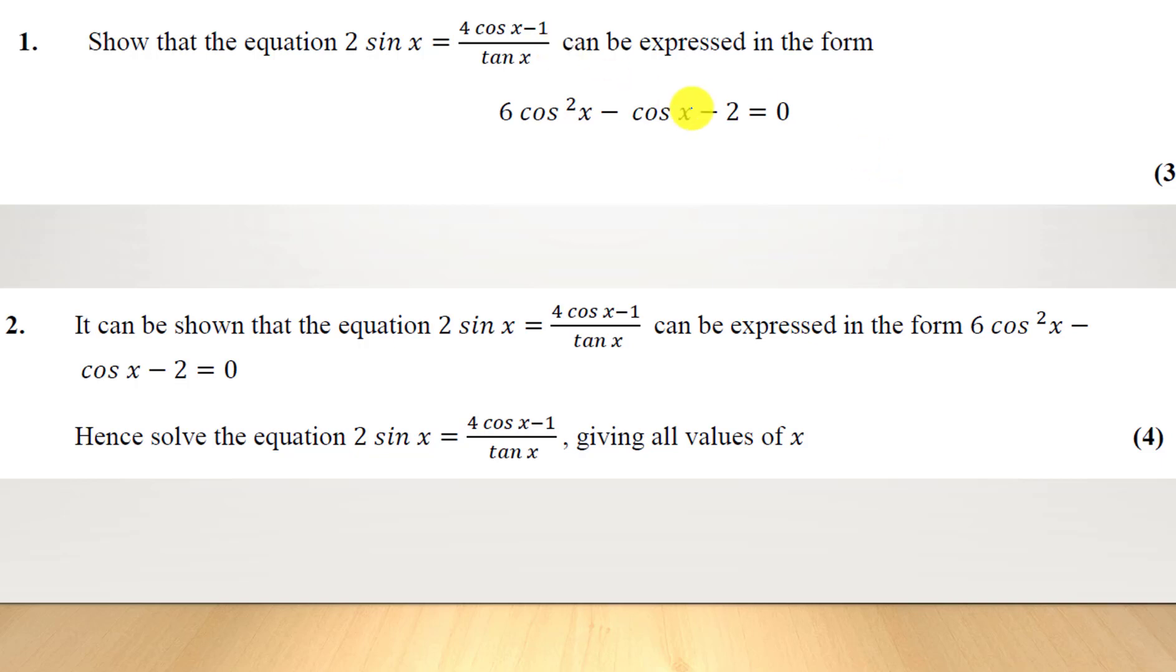Okay, so let's have a look at this question now. It says show that the equation 2sin(x) equals 4cos(x) minus 1 over tan(x) can be expressed in this form. What can we do? Well, we know we've got a tan(x) here that we need to get rid of, and we want it in terms of cos.